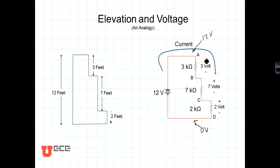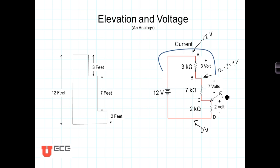If we started at 12 volts and drop three volts, the voltage there relative to our reference would be 12 minus 3 equals 9 volts. Our voltage at point C would be 9 minus 7 equals 2 volts — a seven-volt drop from 9 volts down to 2 volts.